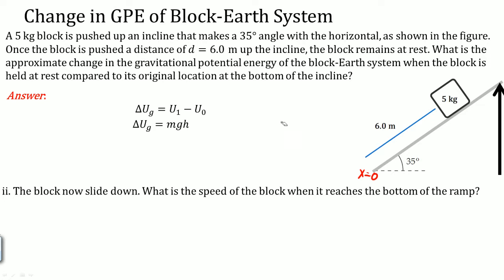We need h here. This can be broken down to its vector component. h would be 6.0 sine theta, that is the vertical direction. This is where the angle is, so this is going to be the opposite side. That is why it's sine. So now you have the height. Plug it in, you get the change in the kinetic energy is 172 joules.